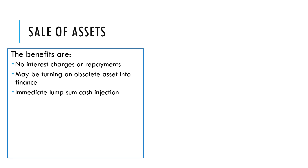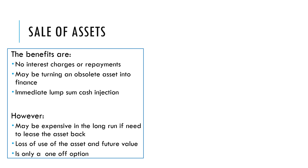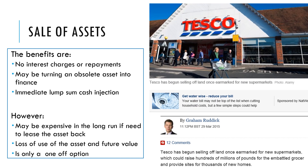The benefits: no interest charges, you don't have to pay anything back, and if the asset is obsolete, not being used, or out of date, it might as well be sold. Often it can be quite a large lump sum and provides an immediate cash injection. However, if you later decide you did need that factory or those vans and you've already sold them, you might have to lease or rent them back in the future, which could cost you more in the long run. It's also only a one-off option — you can only sell an asset once. For example, one supermarket chain has been selling off land earmarked for new supermarkets to raise millions of pounds as an internal source of finance.